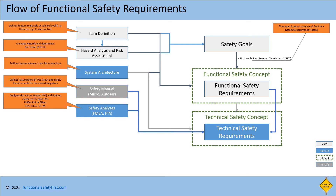Next is safety analysis. ISO 26262 recommends two methods: FMEA and FTA. FMEA is common for all ASIL levels, and FTA is highly recommended for ASIL C and D. Both methods are used to identify causes of failure and to recommend measures to address those failures.